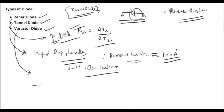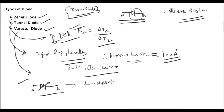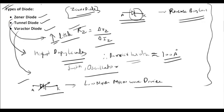The last type of diode is the varactor diode. The varactor diode is used in low-noise microwave devices. For objective exam purposes, only this application needs to be remembered.